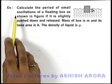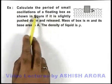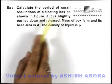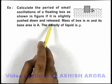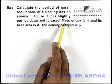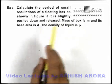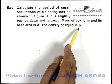In this example we are required to calculate the period of small oscillations of a floating box as shown in figure if it is slightly pushed down and released. We are also given that mass of box is m and its base area is A and the density of liquid is ρ.